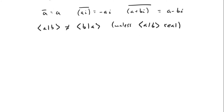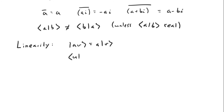The second property that the inner product has to have is linearity. So let's say we have some vector that's just a scalar multiple of another vector. Then the inner product of u and this vector is the same thing as the number times the inner product of u and v.